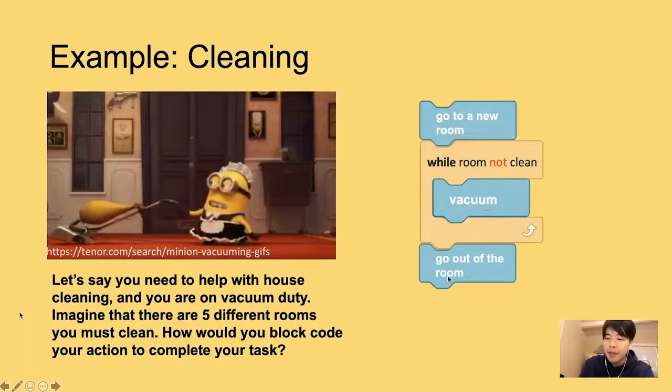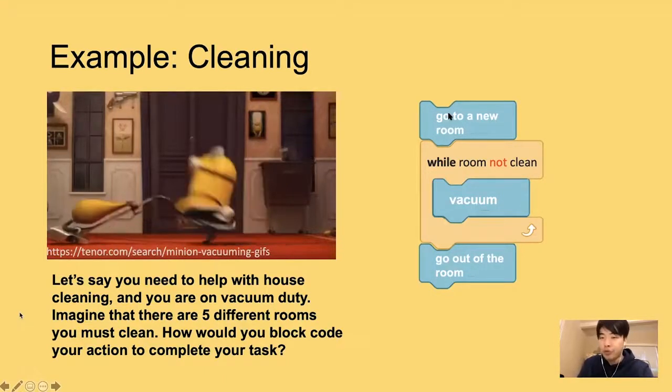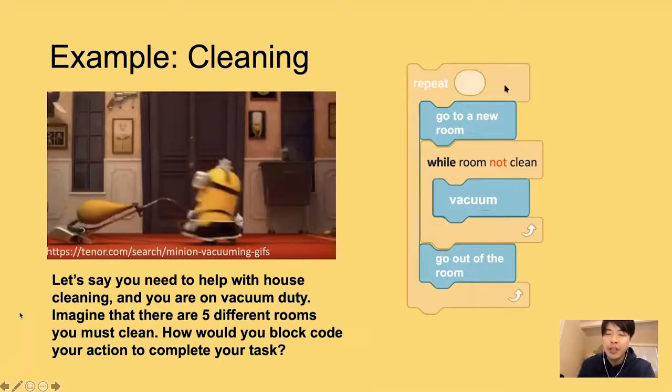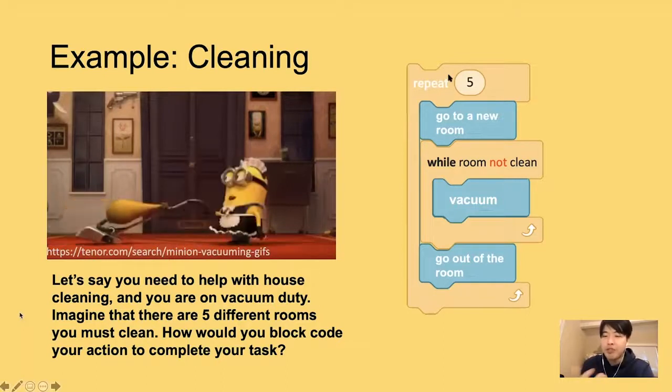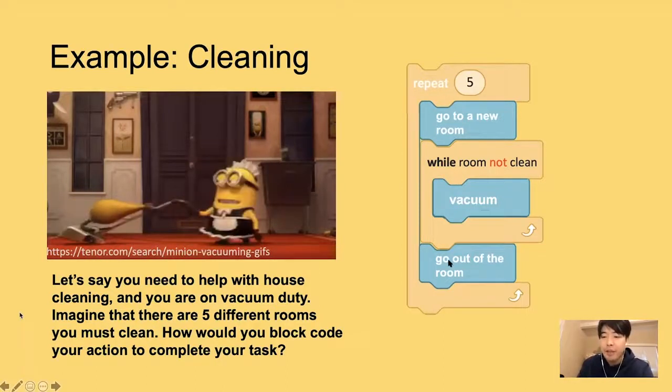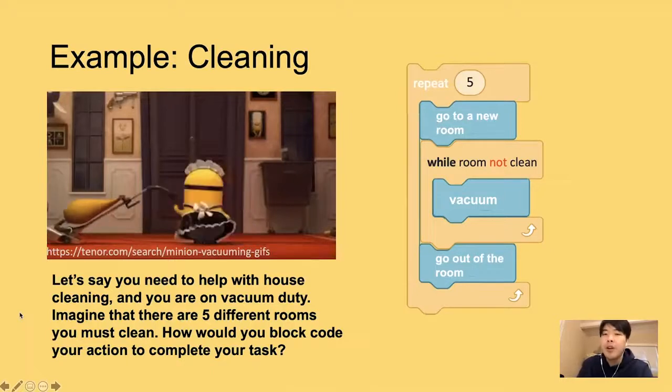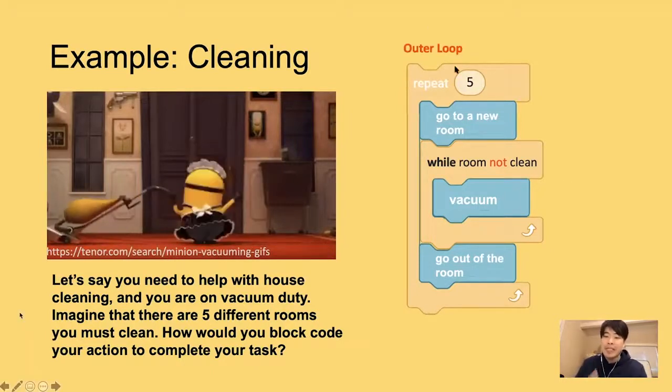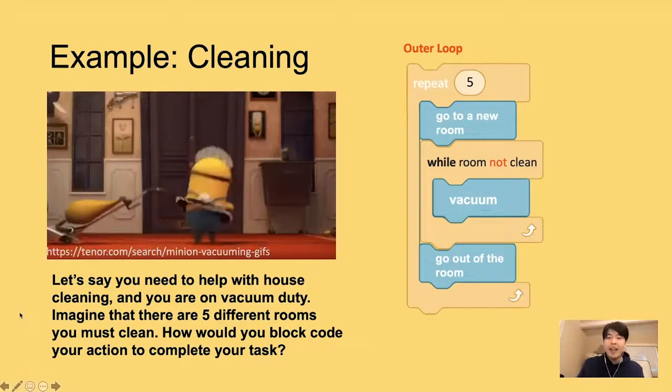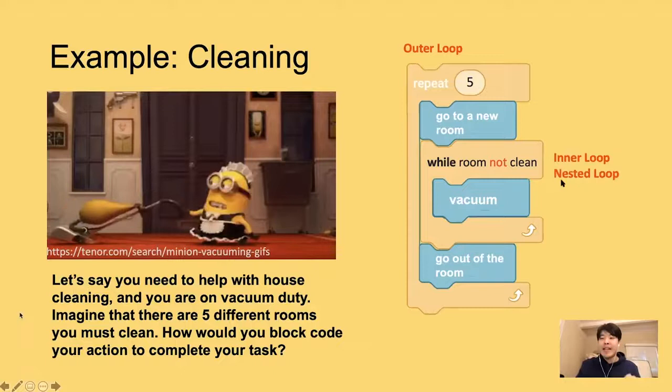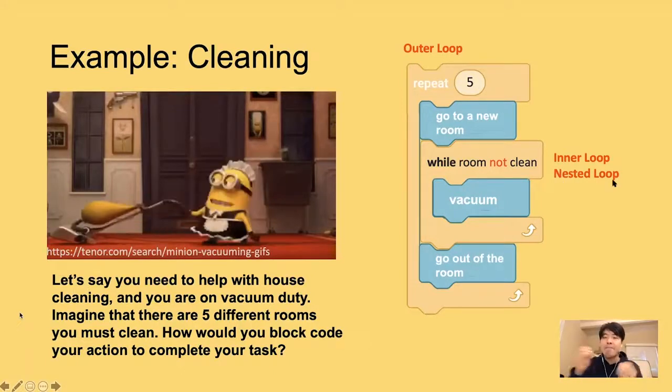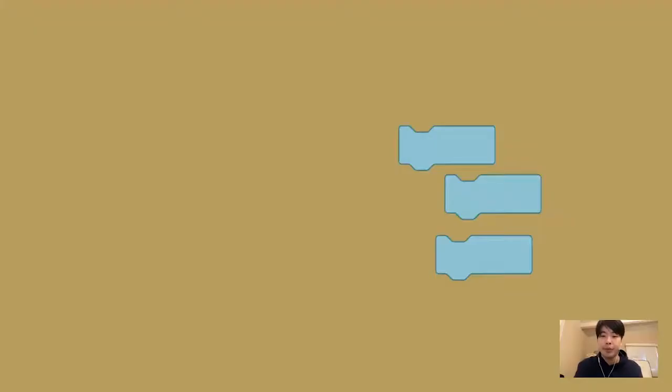When the room is cleaned, this will get out of the loop and go to another room. Once you get out of the room, you need to enter a new room. This is why you need another loop here, a for loop or counting loop, because you actually know exactly how many times you repeat this. You want to repeat this five times. This loop is called the outer loop because it's outside, encapsulating what's in. The inner loop is called the inner loop. That is called a nested loop. When we say nested, it means it's embedded inside of something.